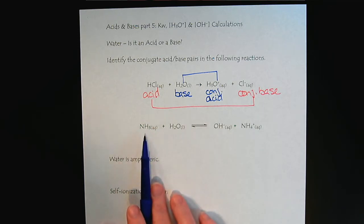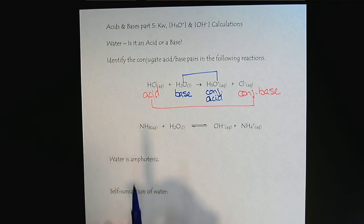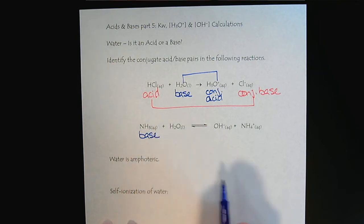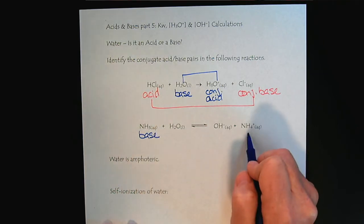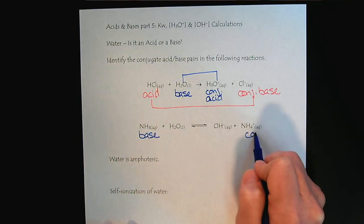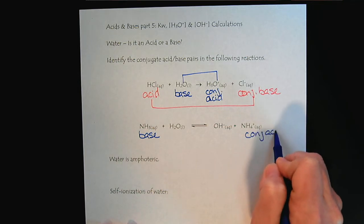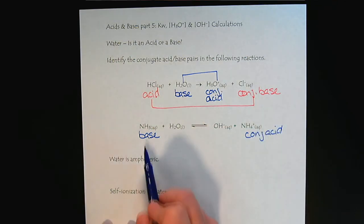And here we see that the ammonia received, accepted a proton. So it took the role of the base. So the ammonium ion would be the conjugate acid. And so we found the first conjugate acid-base pair.